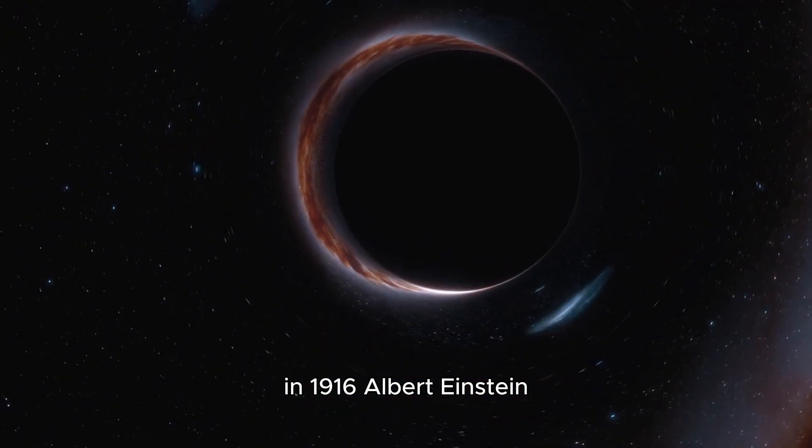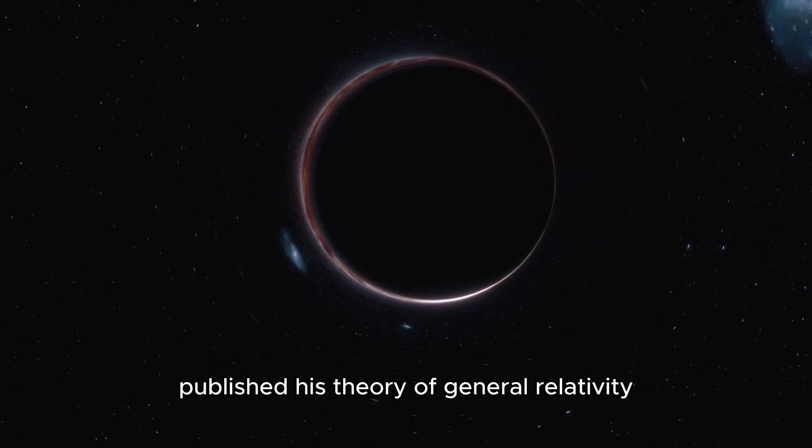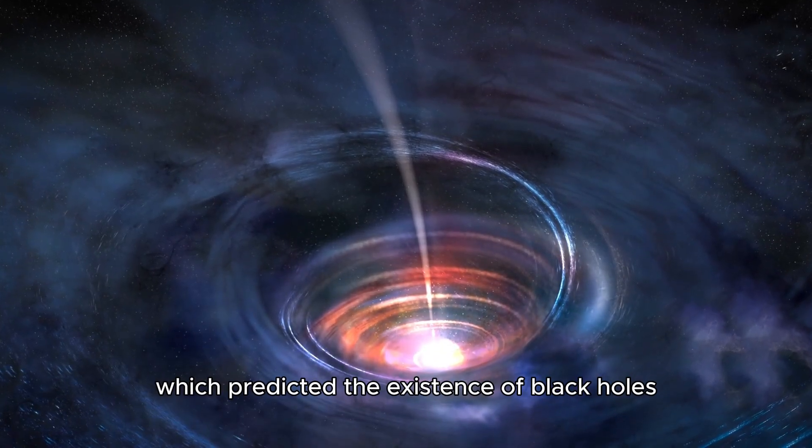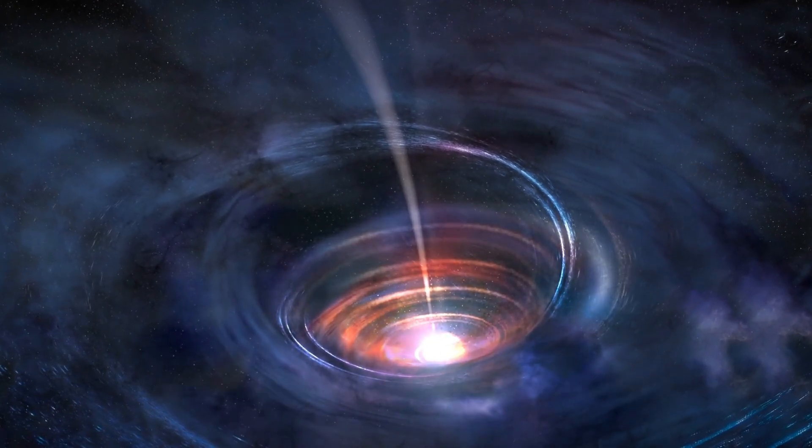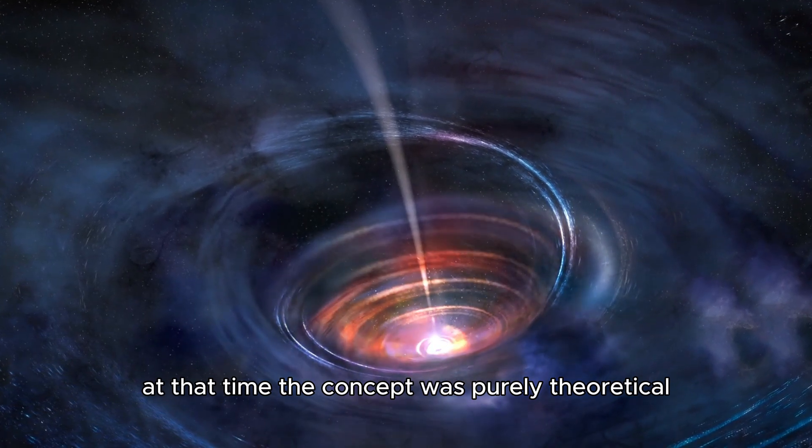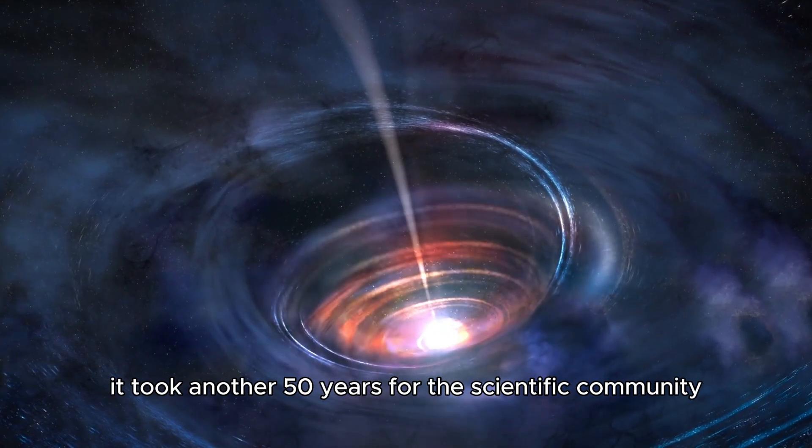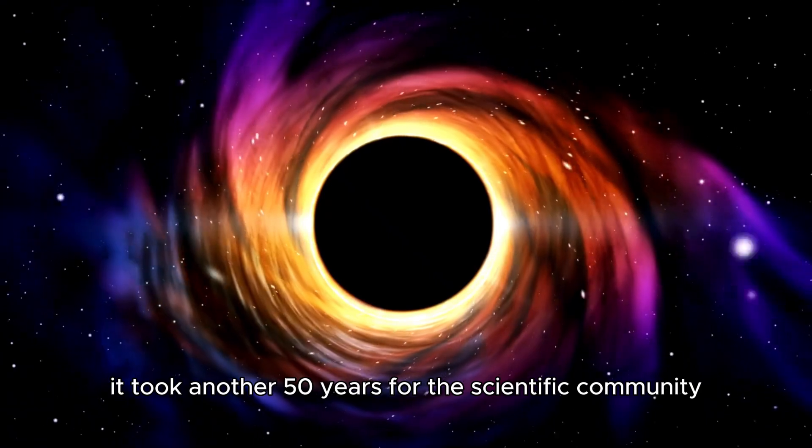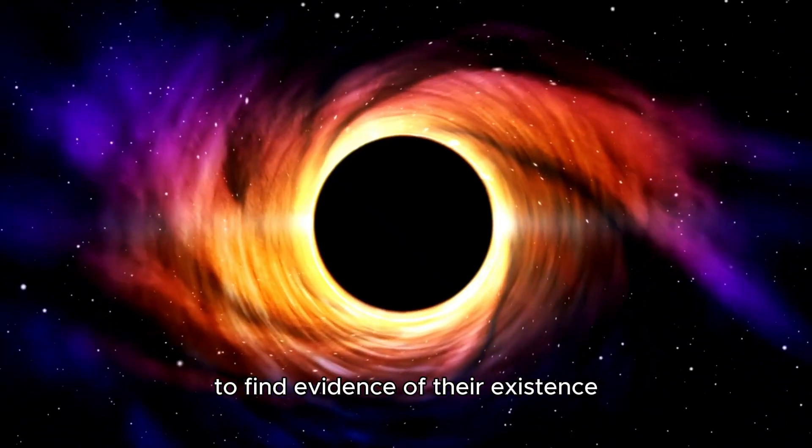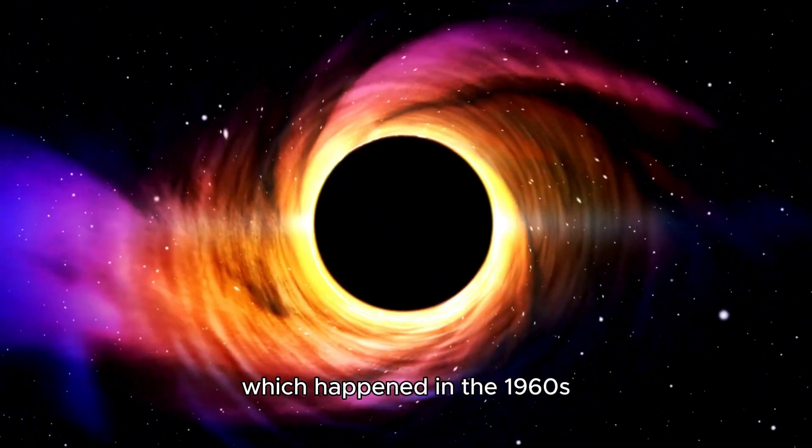In 1916, Albert Einstein published his theory of general relativity, which predicted the existence of black holes. At that time, the concept was purely theoretical. It took another 50 years for the scientific community to find evidence of their existence, which happened in the 1960s.